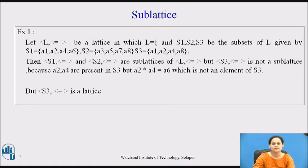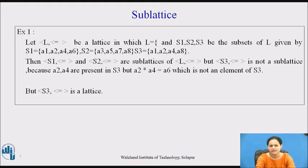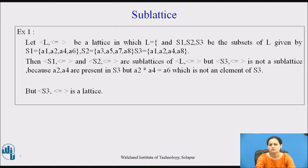Let us see an example. Let (L, ≤) be a lattice where L = {A1, A2, A3, A4, A5, A6, A7, A8}, and let S1, S2, S3 be subsets of L given by: S1 = {A1, A2, A4, A6}, S2 = {A3, A5, A7, A8}, and S3 = {A1, A2, A4, A8}. We find that (S1, ≤) and (S2, ≤) are sub-lattices of (L, ≤).